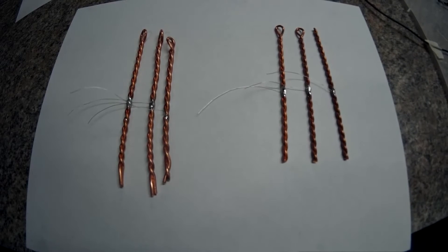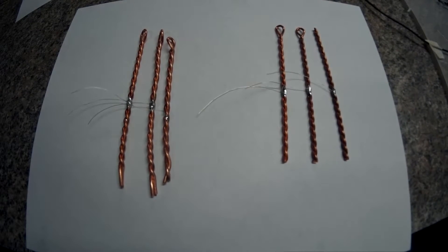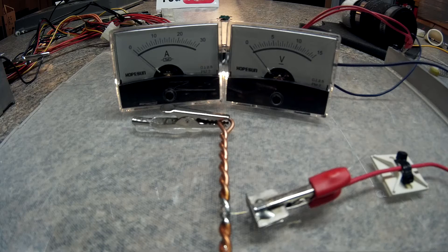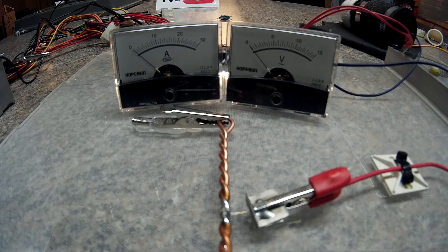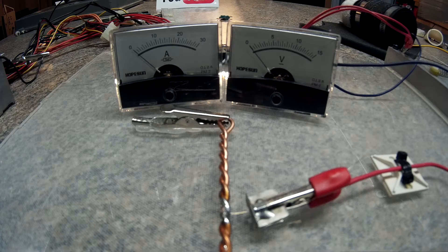Okay, first test is the 12 gauge twisted pair and this gap is set to 7.04 millimeters. Contact.